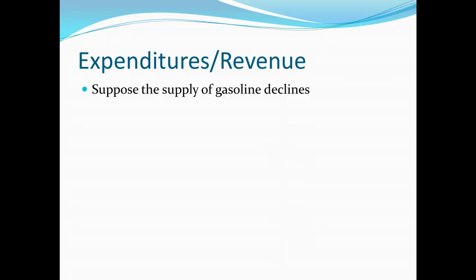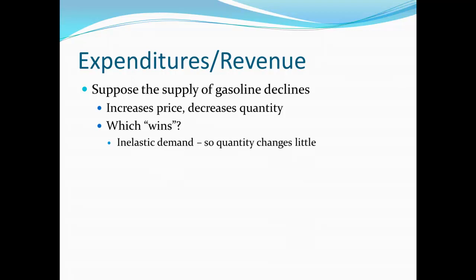Turning finally to expenditures or revenue. Suppose the supply of gasoline declines. We know this is going to increase price and decrease quantity. After all, gasoline has become more scarce — there's less available to be traded. This increase in scarcity also tends to increase the price. The question is, which one of these wins? Is the price going to go up more, or is the quantity going to fall more? In this case, we can make a pretty strong argument that demand is inelastic. If the price of gasoline goes up, I'm going to buy almost exactly as much gasoline as before. So quantity isn't going to change very much — we get a very small decrease in quantity with probably a large increase in price. As a result, this higher price is going to be tied to higher expenditures or higher revenue. So we would expect, if the supply of gasoline declines, we end up with higher expenditures on gasoline. That is, the price will go up enough that people are actually spending more total on gasoline than they were before, even though they're buying less of it.